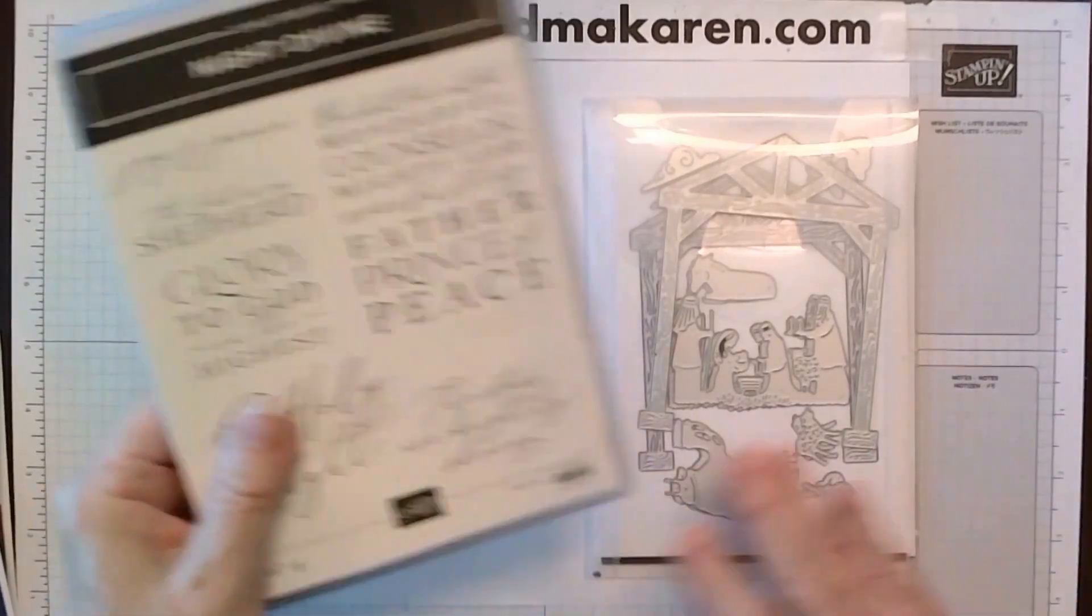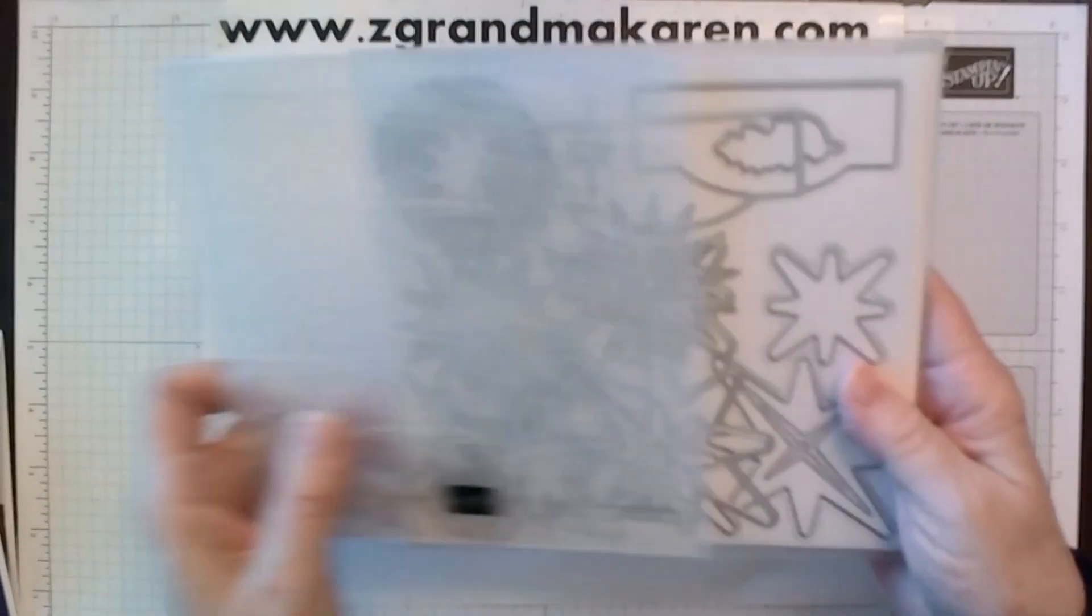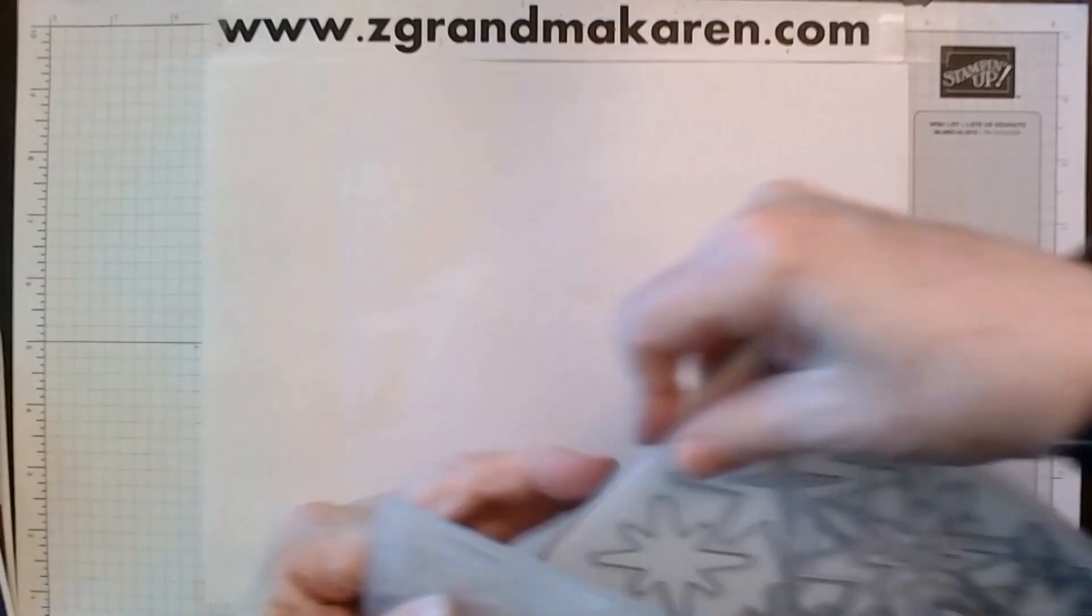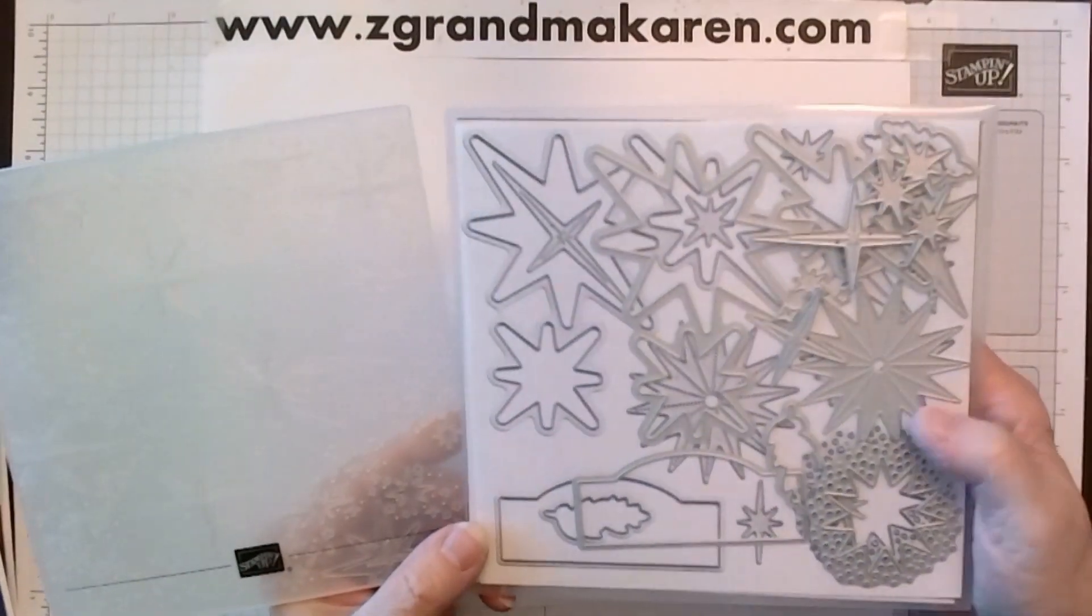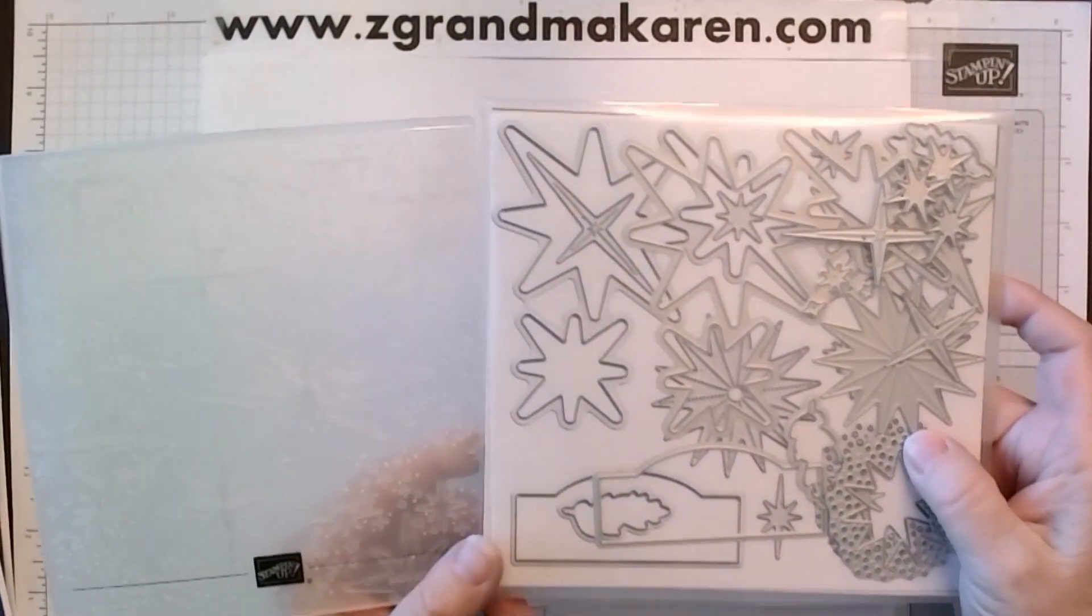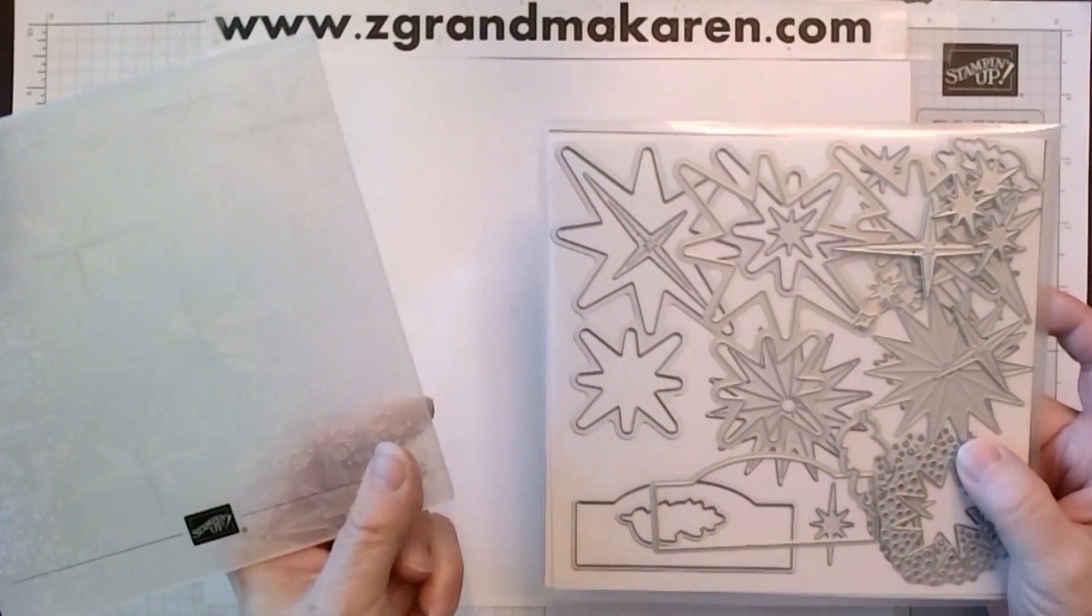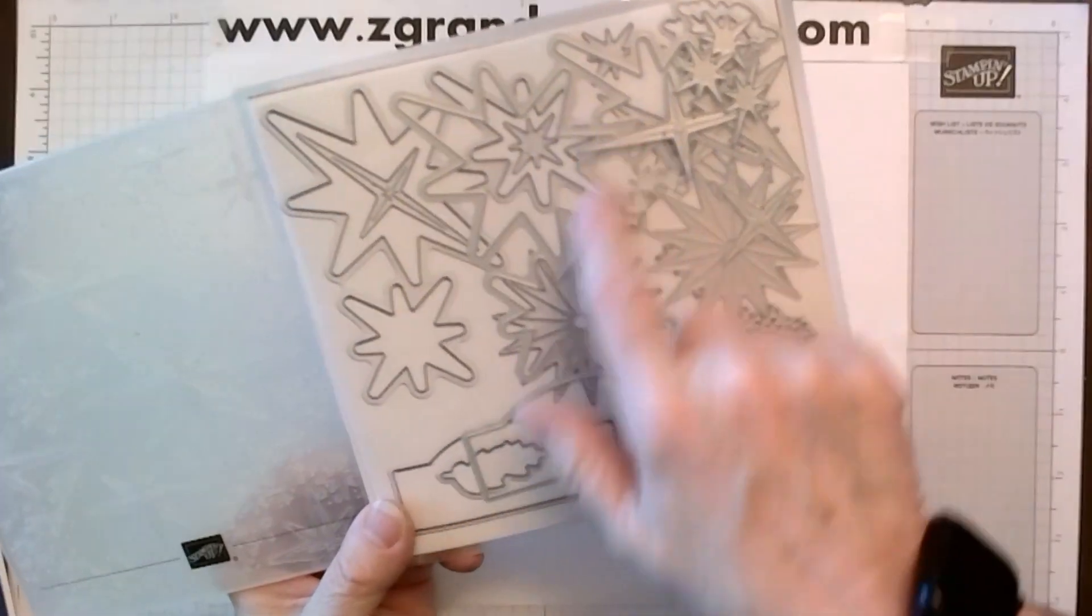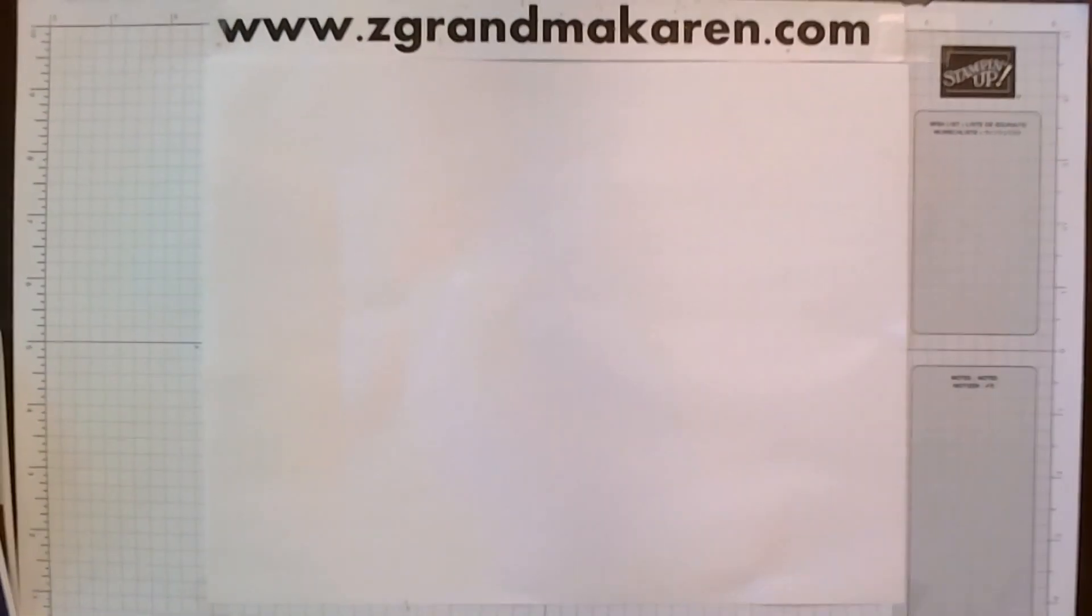Okay, another bundle that's with, that it doesn't come with it, but it's part of that set sort of. It's the stars and these are called stars at night. And there are dies and this is a hybrid and it has the star embossing folder. And then these will work with this. Okay, now let's get started.